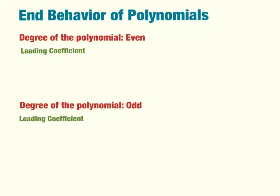End behavior of polynomials completely depends on the leading coefficient and the degree of the polynomial. The leading coefficient is attached to whatever variable gave us the degree of the polynomial, and the degree is just the highest exponent.